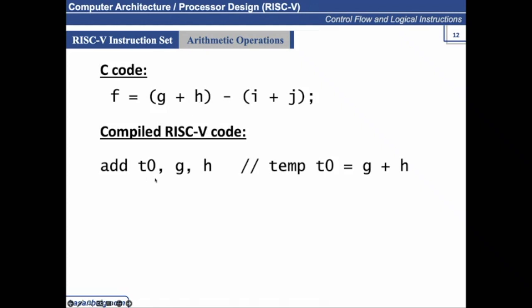So g plus h are added and stored in t0, and similarly i and j are added and stored in t1. Then finally the results are subtracted. Here, t1 is being subtracted from t0, so t0 minus t1, and the results are stored in f.